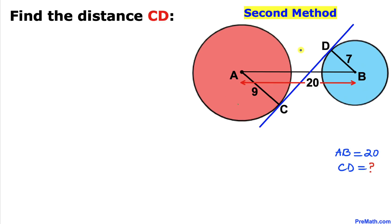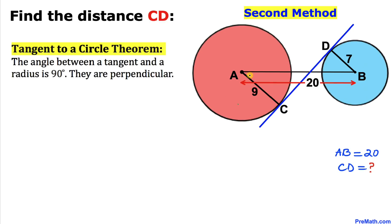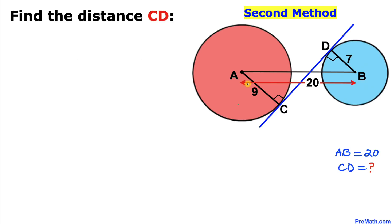Now for the second method. AC and BD are radii, and CD is the line of tangency. By the tangent-to-a-circle theorem, the angle between a tangent and a radius is always 90 degrees — they are perpendicular. So both angles at C and D are 90 degrees, which means the two radii are parallel to each other.